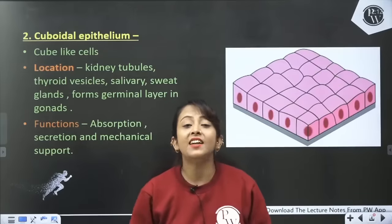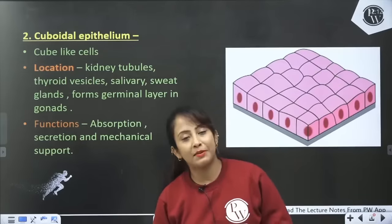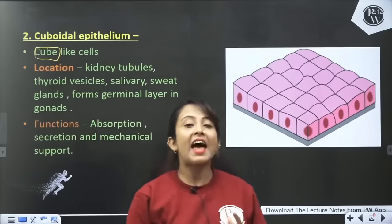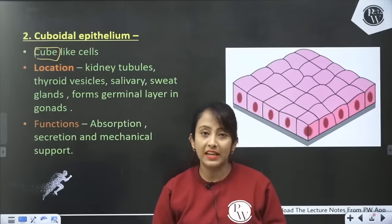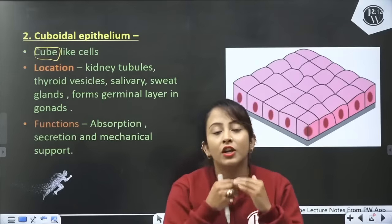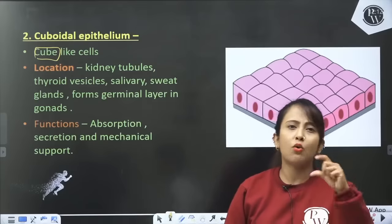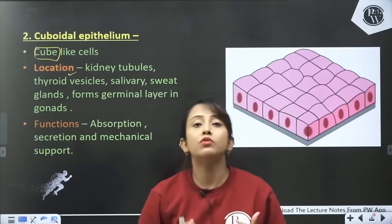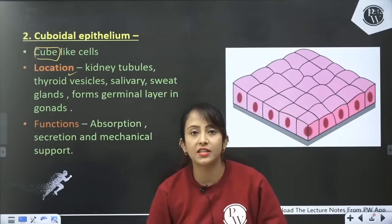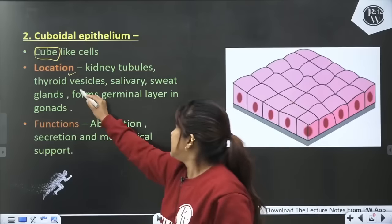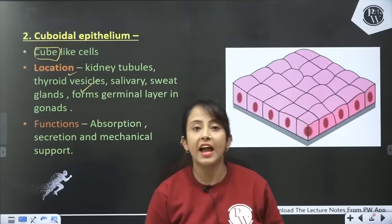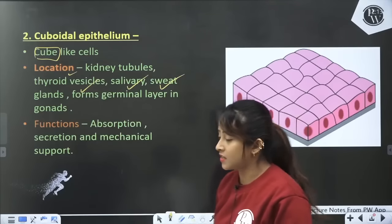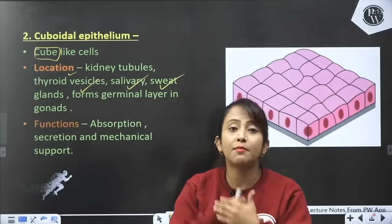Now we come to the second type of epithelial tissue — cuboidal epithelium. There is no complex logic here: just because these cells look like a cube under a microscope, they are called cuboidal epithelium. They are slightly thicker than squamous epithelium, and their structure is cube-like.